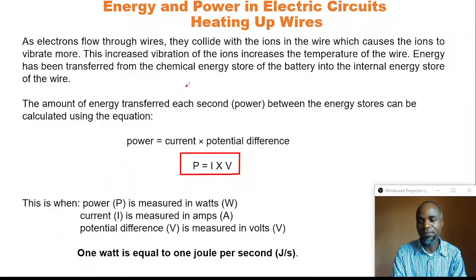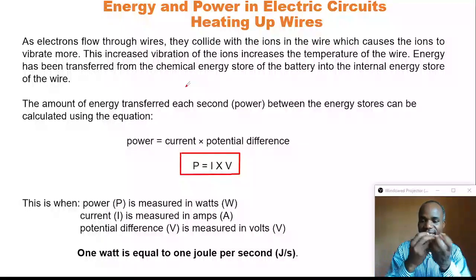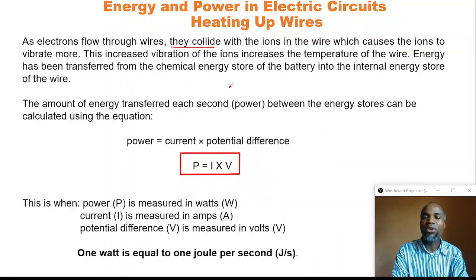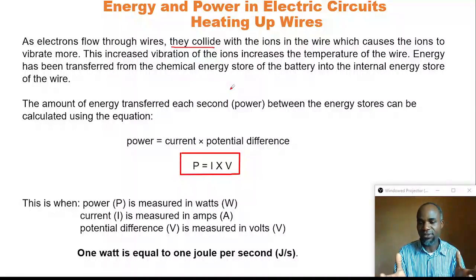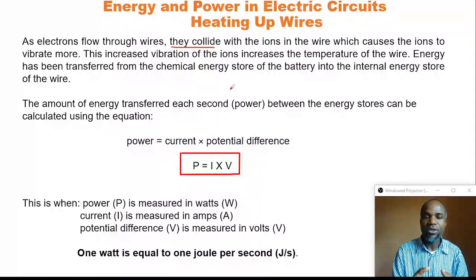I repeat, as electrons flow through wires, they collide with the ions in the wire, which causes the ions to vibrate more. This increase in vibration of the ions increases the temperature of the wire.